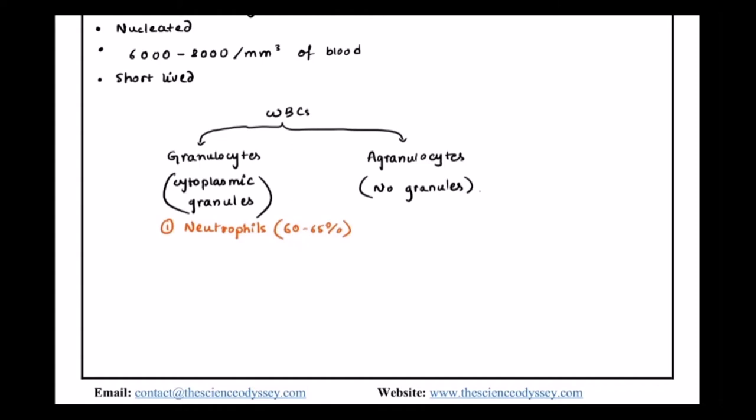And the second one is the basophils. These are the least in numbers of the whole WBC that is present. Neutrophils were the highest in number and basophils are the least in number. These are about 0.5 to 1% of WBC.